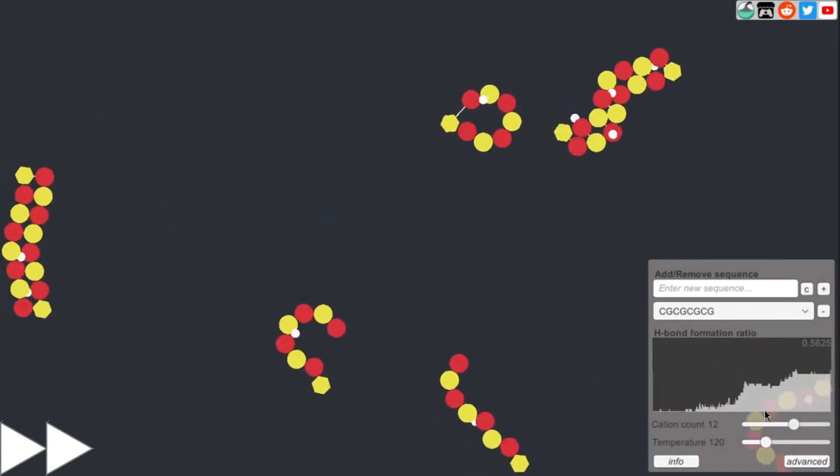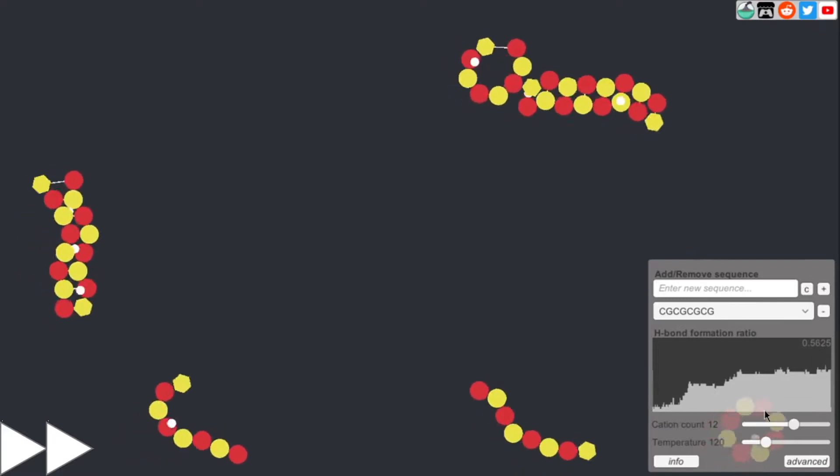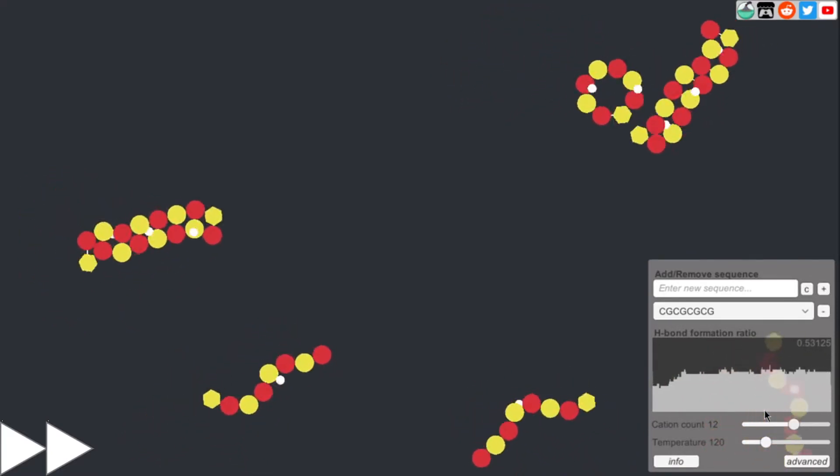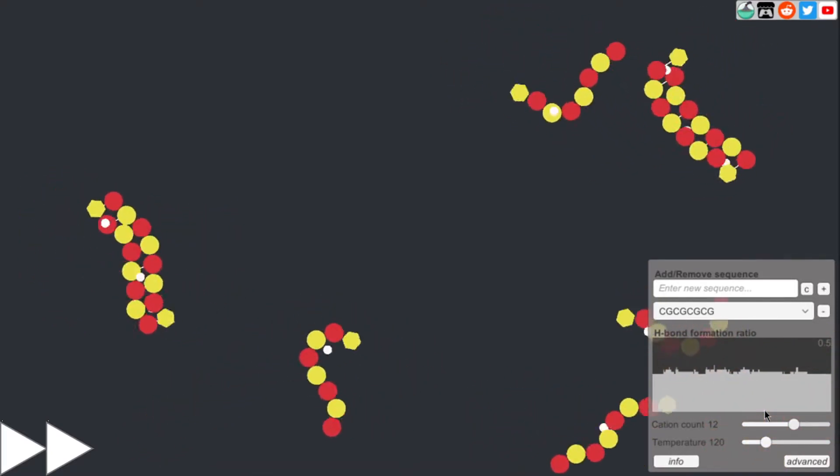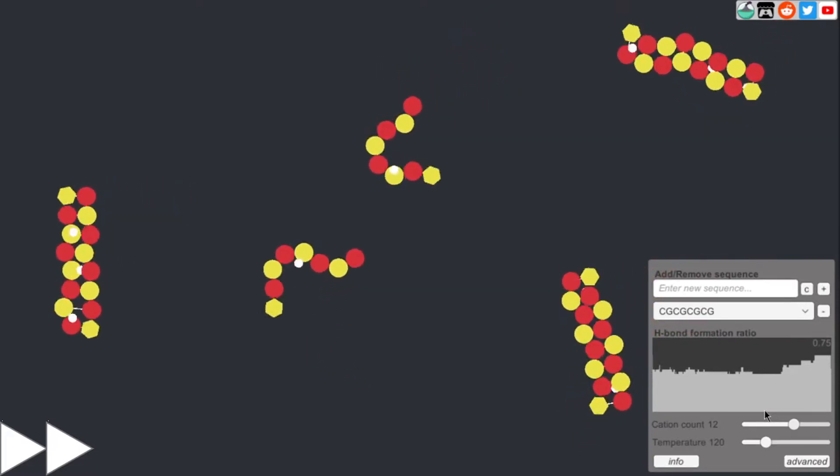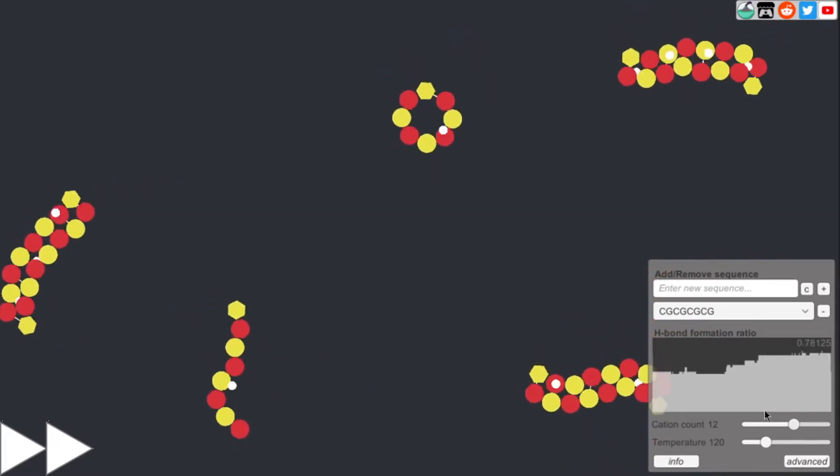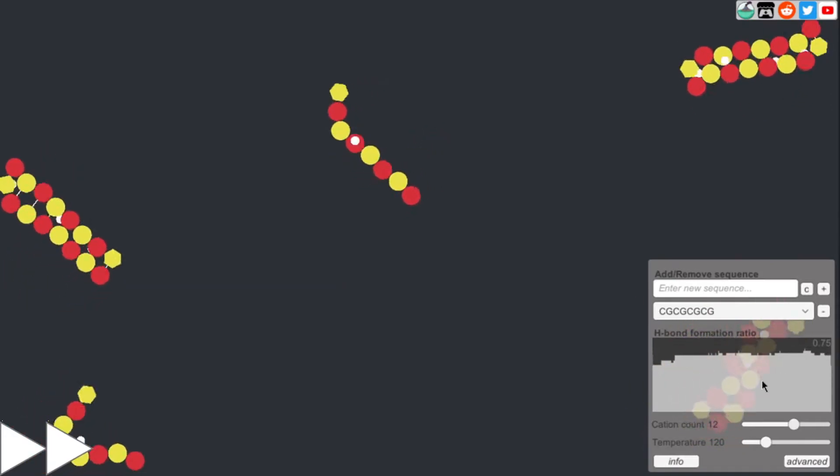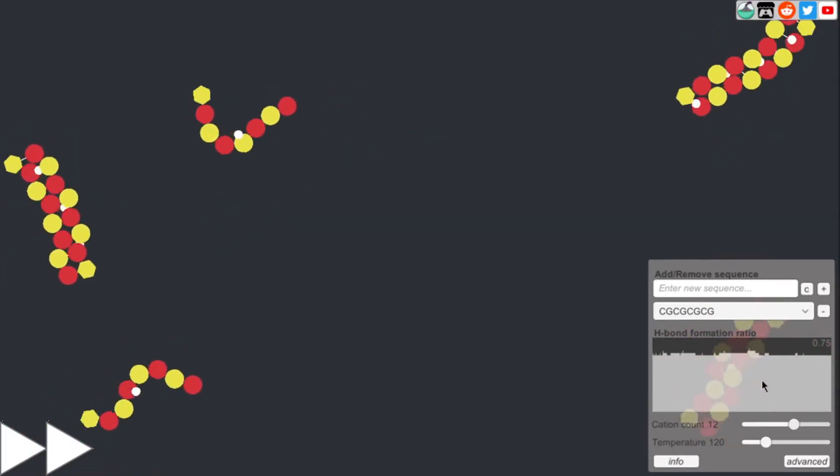If there are too many cations, it can actually have a negative effect on the proper DNA formation. That's why we limited the cation count to 20. You can see on the graph about 70% of all nucleotides form hydrogen bonds.